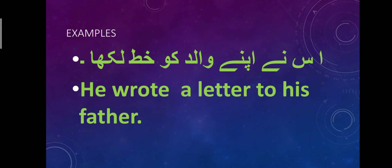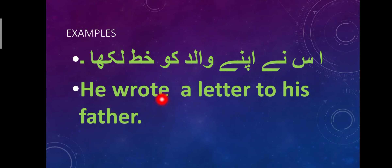For example: 'Isne apne walid ko khat likha' — He wrote a letter to his father. Notice that the subject is followed by 'wrote,' which is the second form of the verb. 'Write' becomes 'wrote' in its second form. So: He wrote a letter to his father.